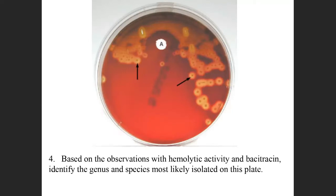Based on the observations above, you have a hemolytic activity. What's the hemolytic activity? Beta — very good. Is it sensitive or resistant to the A-disc? Sensitive — very good. Therefore, if you have a gram-positive coccus, catalase negative, beta hemolytic, and sensitive to the A-disc, what's the genus and the species? Streptococcus pyogenes — that is correct. Those are the kinds of questions you're going to get.